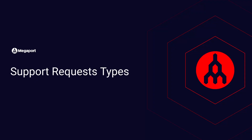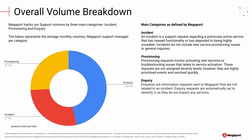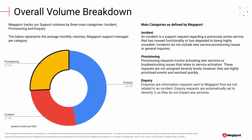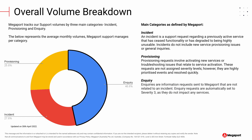Support request types. When it comes to customer tickets, we have three main types: incident tickets, in which a service is down or disrupted; provisioning tickets, which relate to new services or changes to existing services; and inquiry tickets, for general questions. As you can see here, roughly half of our tickets are general inquiries, with provisioning being about 25%, and the remaining 27% are incidents.